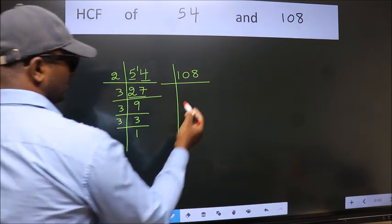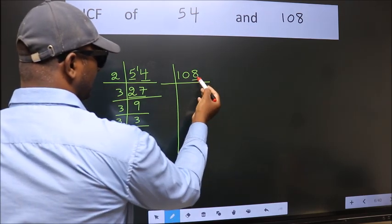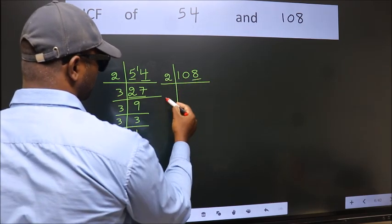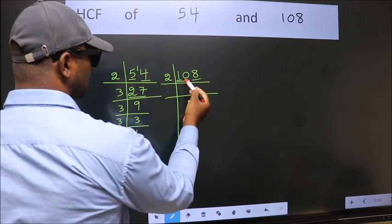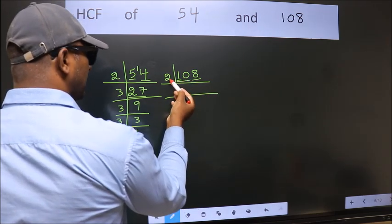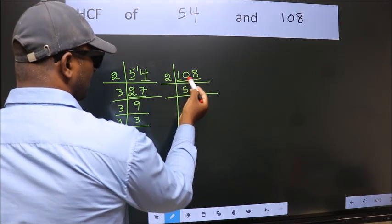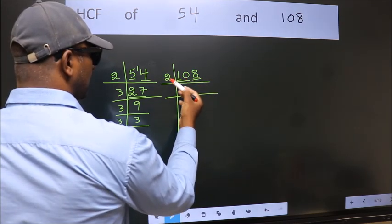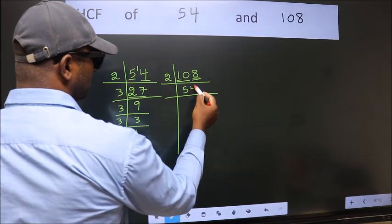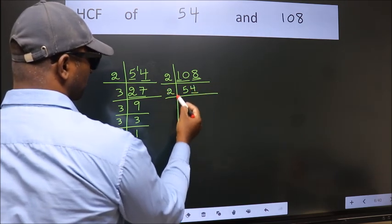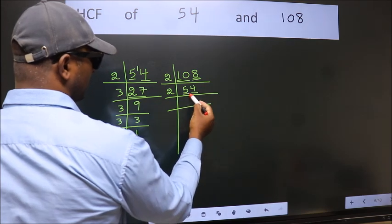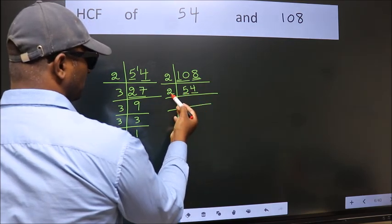The other number. Last digit 8, even, so take 2. First number 1, smaller than 2, so 2 into 10. When do we get 10 in 2 table? 2 fives, 10. The other number 8, when do we get 8 in 2 table? 2 fours, 8. Last digit 4, even, so take 2. First number 5, a number close to 5 in 2 table is 2 twos, 4.